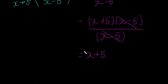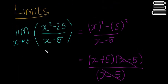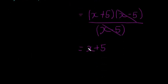We're left with x plus 5 as our answer. Now we can sub our 5 in because it won't give us 0 divided by 0 or something awkward like that, it'll give us a real number. That's equal to 5 plus 5 is equal to 10. So that's our limit.